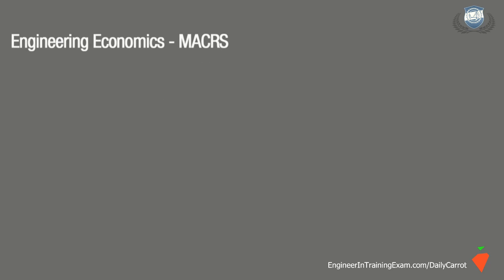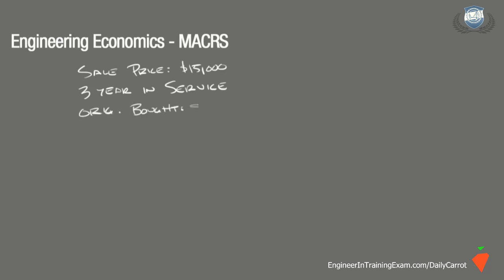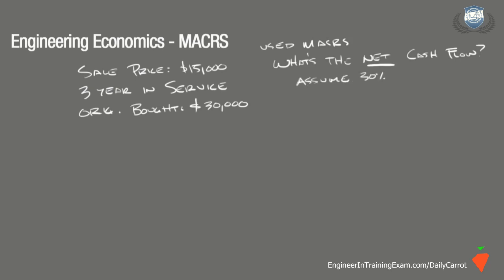The problem statement says an engineering firm sold a piece of equipment for $15,000 after 3 years of service. The equipment was bought for $30,000 and has an expected lifespan of 5 years. If Modified Acceleration Cost Recovery System Depreciation was used for the depreciation schedule, what is the net cash flow from the sale of the equipment?